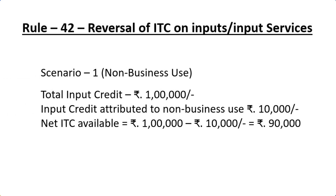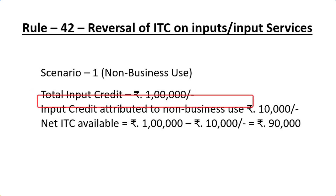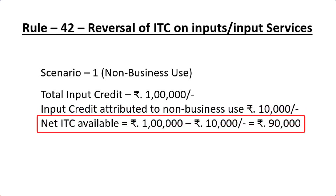The first scenario is the case of input used for non-business purposes. Let us say the total input credit available for the month is rupees one lakh. Out of this, an amount of 10,000 rupees has been used for non-business purposes. The net ITC amount to be claimed is total input credit of one lakh minus 10,000 rupees used for non-business purposes. So the balance ITC to be claimed will be 90,000, and 10,000 rupees has to be reversed for the said month.